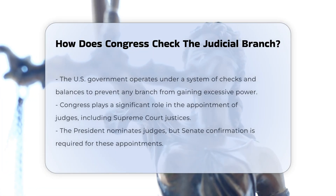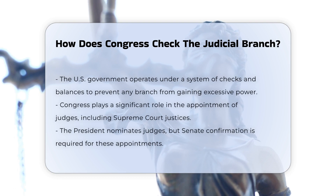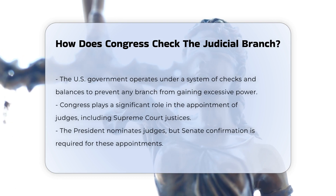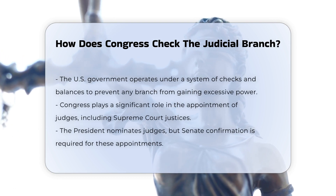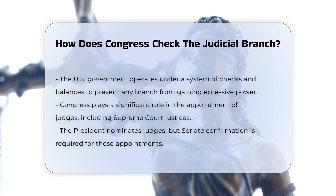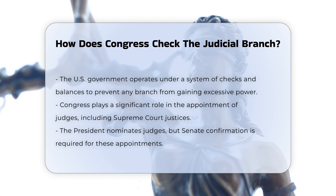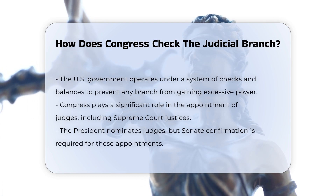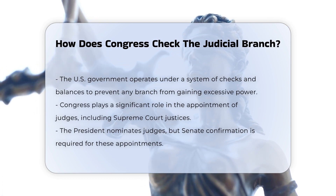The system of checks and balances in the U.S. government ensures that no single branch has too much power. When it comes to the judicial branch, Congress has several mechanisms to check its authority.